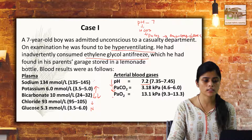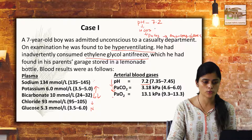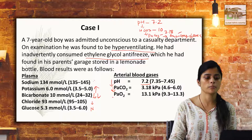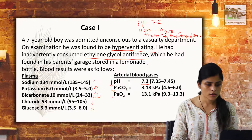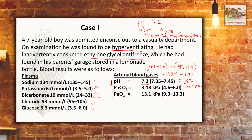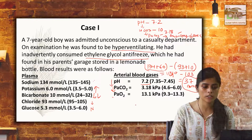In this case, the pH was 7.2, bicarbonate is 10 millimole, PaCO2 is 3.1 kPa. For the anion gap, we calculate it as sodium plus potassium minus bicarbonate plus fluoride. If we calculate the anion gap using that formula, we get a very high value — that is 37 millimole per litre.